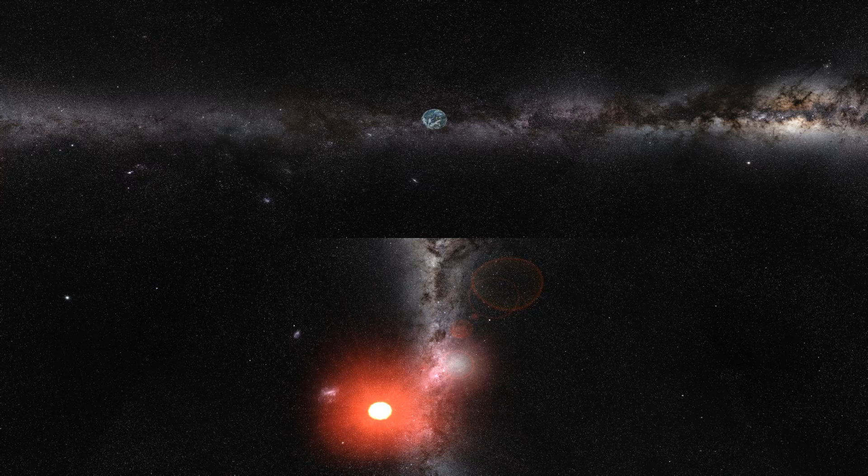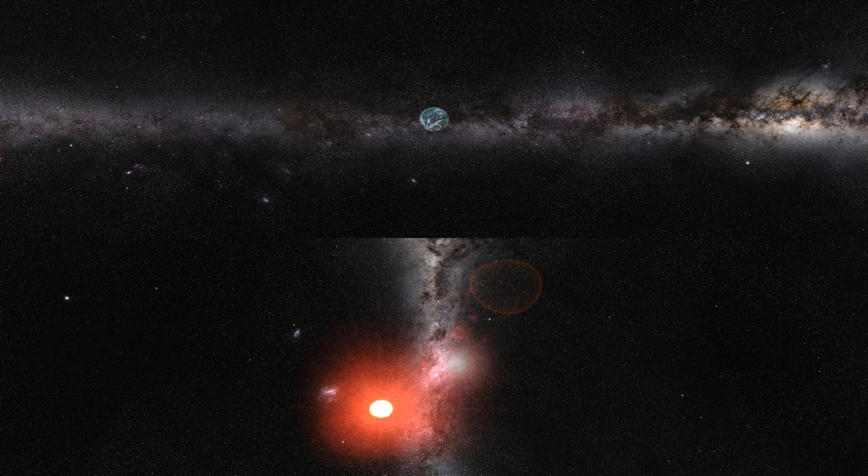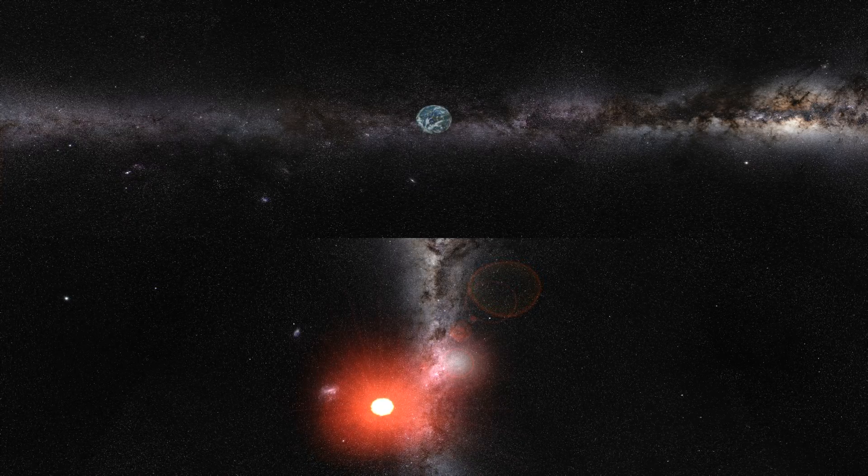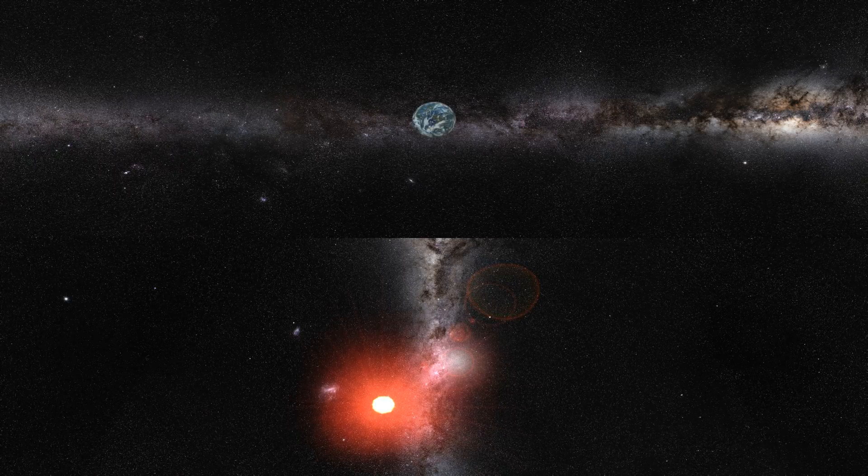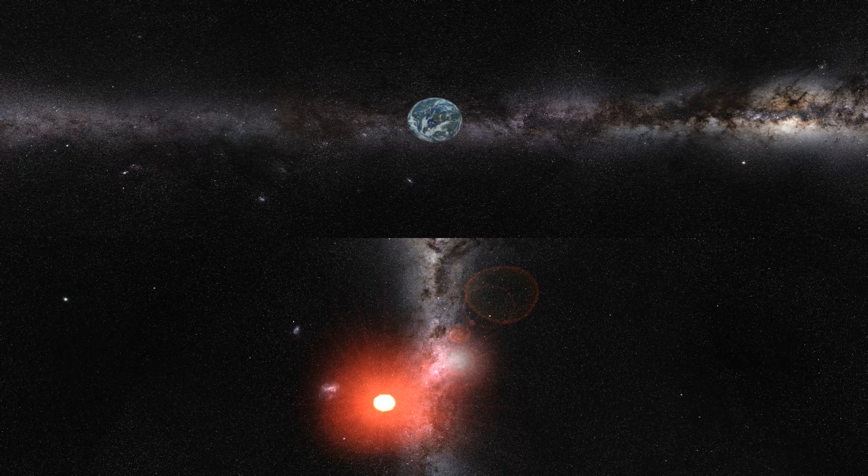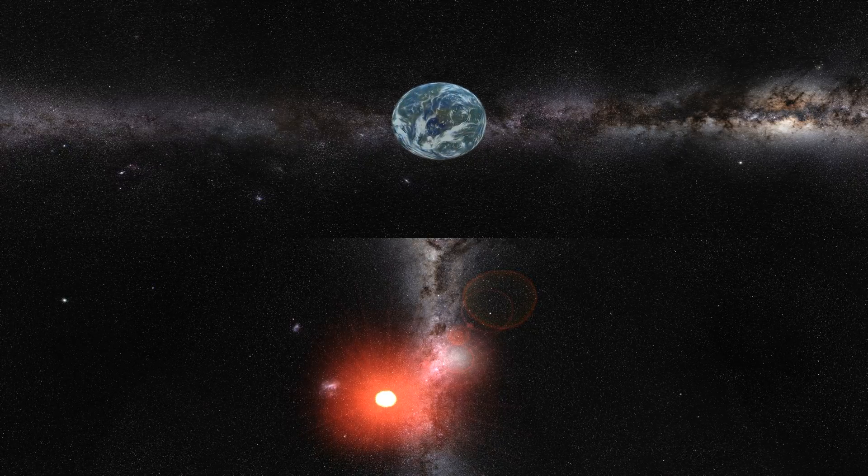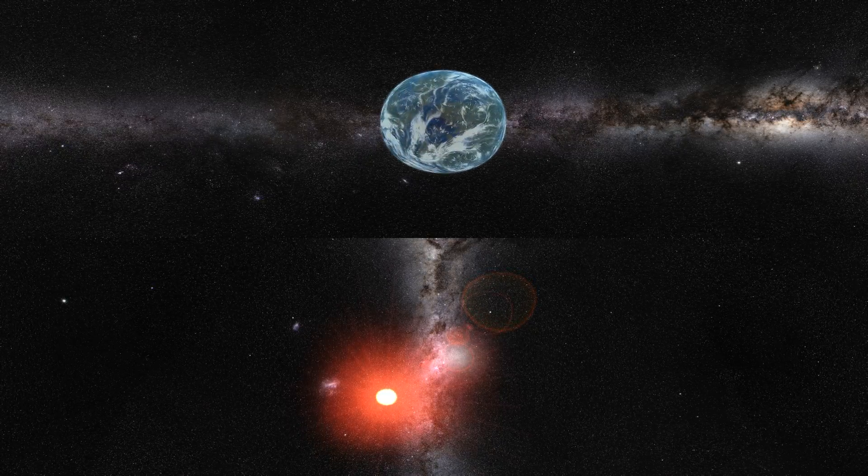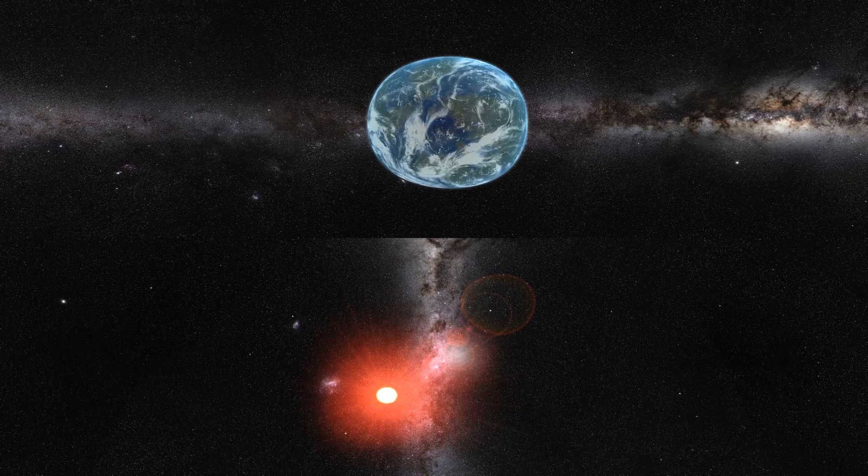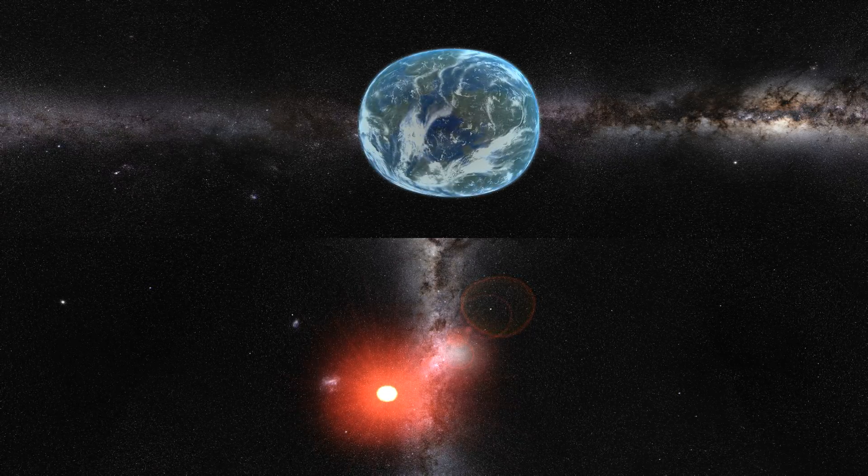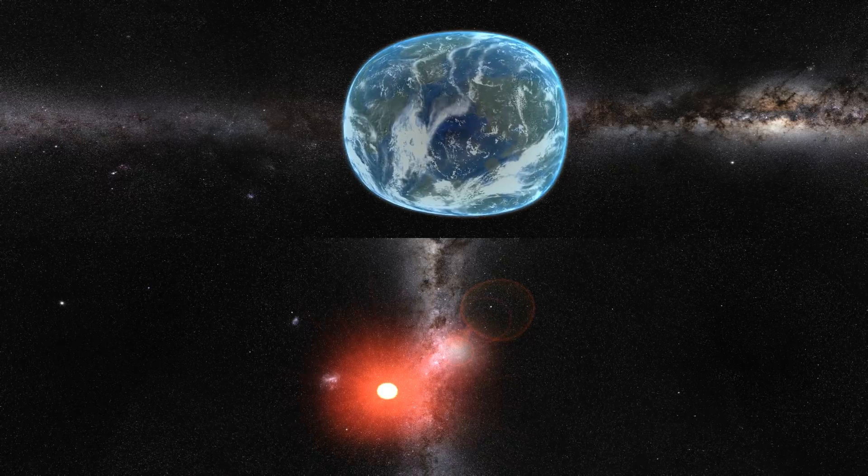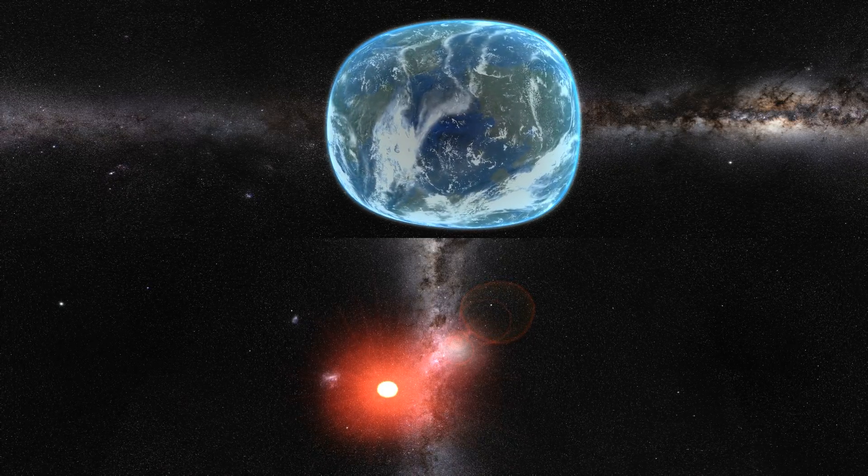The exoplanet Kepler-1649c circles a red dwarf star that lies 300 light-years from Earth, a new study reports. Kepler-1649c completes one orbit every 19.5 Earth days, putting the alien planet in its host star's habitable zone, the just-right range of distances where liquid water could exist on a world's surface.